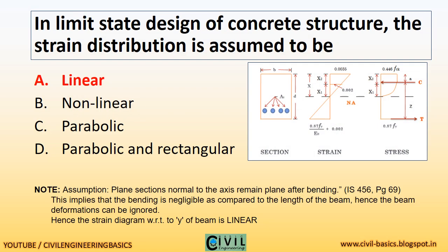In limit state design of concrete structures, the strain distribution is assumed to be linear. Assumption: plane sections normal to the axis remain plane after bending — IS 456, page 69. This implies that shear deformation is negligible compared to the length of the beam, hence beam deformations can be ignored, and the strain diagram with respect to the Y-axis of the beam is linear.